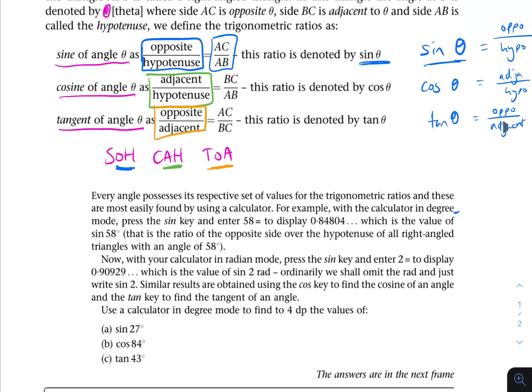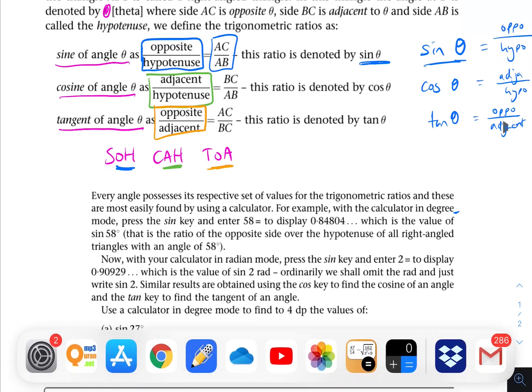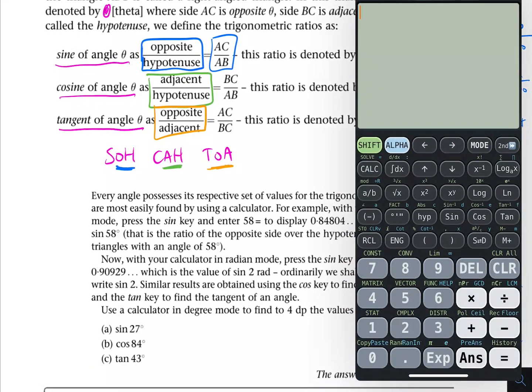That is the ratio of the opposite side over the hypotenuse of all right-angled triangles with an angle of 58 degrees. Now with your calculator in radian mode, press the sine key and enter 2 is equal to display 0.90929, which is the value of sine 2 radians. So let's try that. Let's put our calculator in radian mode. So degrees to radian. And then they wanted us to put sine 2, which is equal to 0.909. And that we can see is the case here.